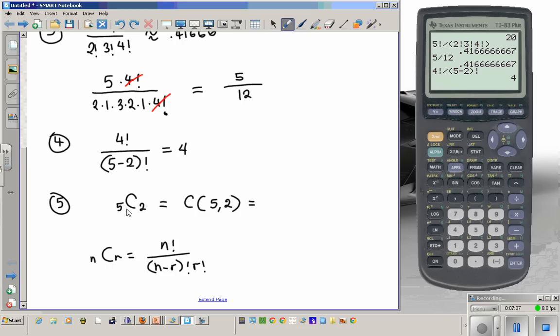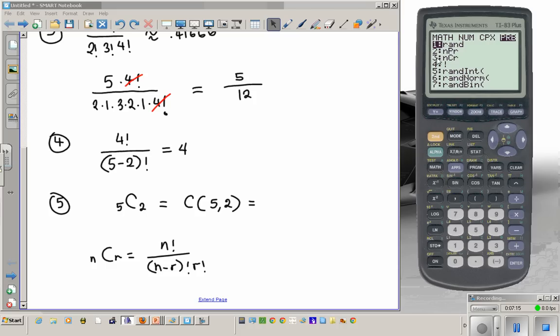All you do is you enter the first number, which is 5, go to math, probability. You see these two... In items 2 and 3, this is permutations and this is combination. So I need combination, so I'll select 3, and then 2, second number, enter. The answer is 10.